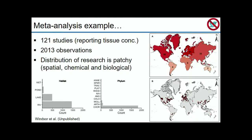As an example, a meta-analysis looking at tissue concentrations of a select suite of endocrine-disrupting chemicals within freshwater organisms used 121 studies providing 2,013 observations. There's a patchy spatial distribution, but more importantly, a patchy distribution in terms of the biota covered — chordates have the highest abundance of research, followed by arthropods and mollusks. Also, for fresh waters, most research is conducted in rivers rather than lakes, ponds, or wetlands.